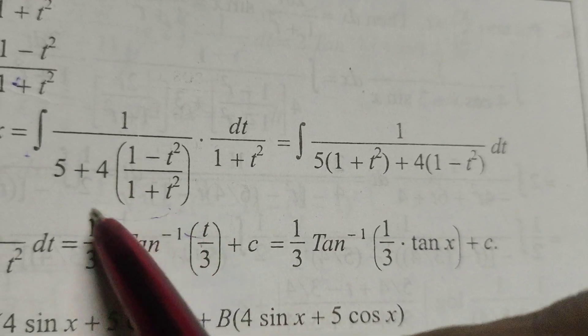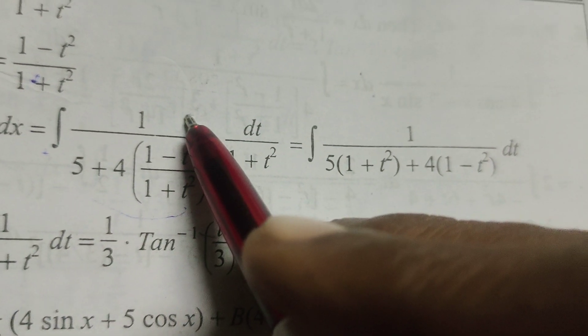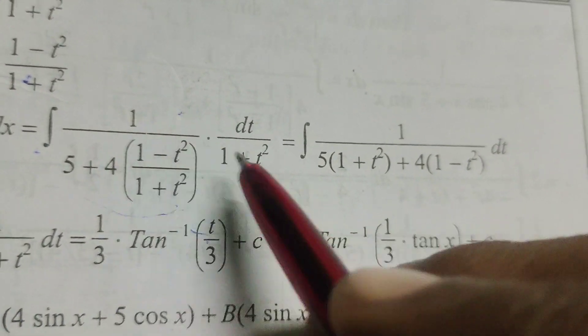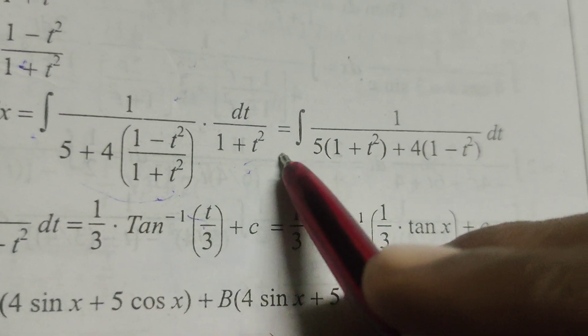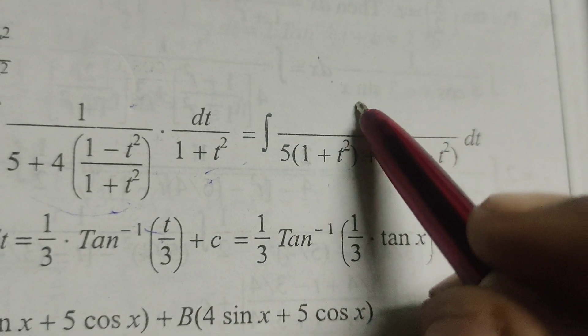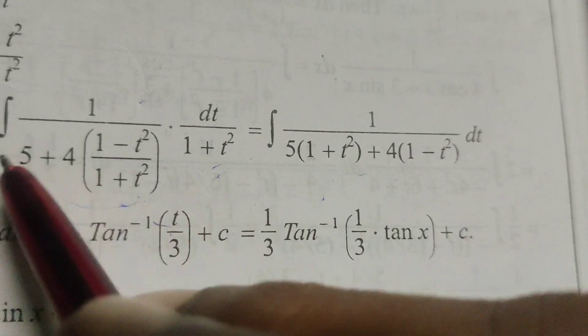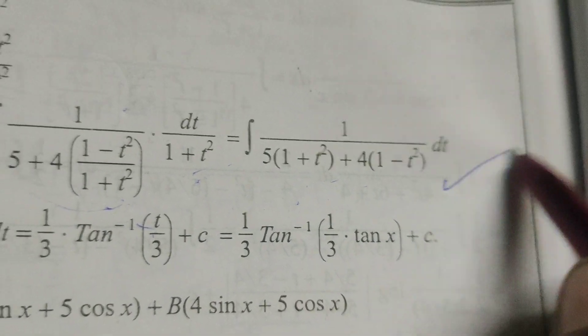Then this 1 plus t square will get to numerator. Here 1 plus t square gets cancelled. Then only 1 by 5 into 1 plus t square plus 4 into 1 minus t square dt.